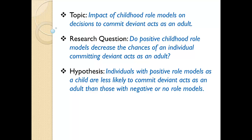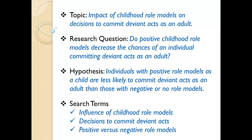We need these three items defined before starting our literature review because we need a baseline from which to begin our literature search. The topic, research question, and hypothesis are a great place to look for key terms to conduct our search. When I look at these three components in our example, the following terms jump out at me: influence of childhood role models, decisions to commit deviant acts, and positive versus negative role models. These are great terms to begin our literature search with, and hopefully they will lead us to others as we start reviewing the material we locate.